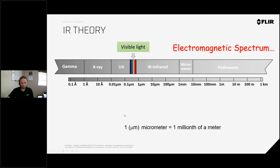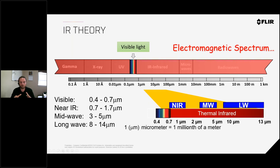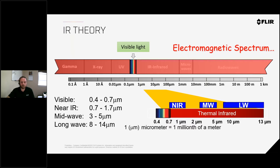One micrometer is one millionth of a meter — very, very tiny. When we look at infrared, it's just past the visible spectrum at 0.4 to 0.7 micrometers. Then you have near IR at 0.7 to 1.7, mid-wave at 3 to 5, and long-wave at 8 to 14 micrometers. Most of the cameras we're going to talk about today are long-wave infrared in that 8 to 14 micrometer range, which are the most common handheld thermal imaging cameras.